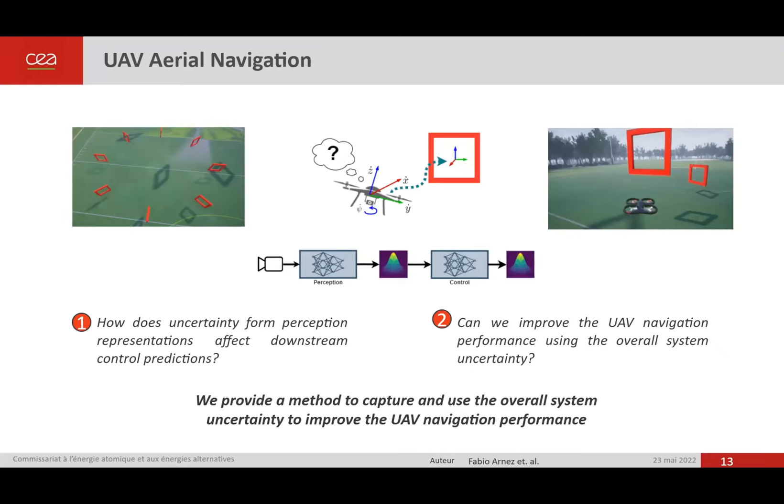In our work, we address the task of UAV navigation through a set of gates with unknown location. The idea is to build a network that allows the UAV to pass through this set of gates. We want to address: how does uncertainty from perception impact the control predictions at the output, and how can we improve UAV navigation performance by using overall system uncertainty?